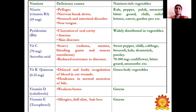Vitamin B6, otherwise called pyridoxine, is widely distributed in almost all vegetables. Deficiency of vitamin B6 leads to ulcers in the oral cavity, anemia, and certain skin diseases.